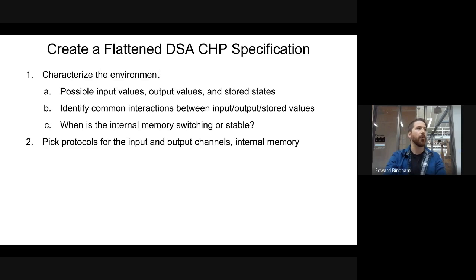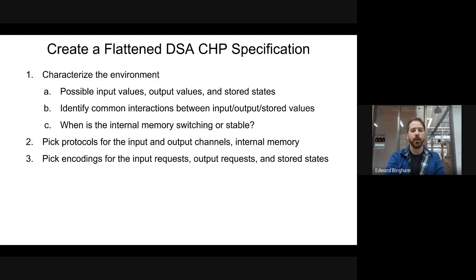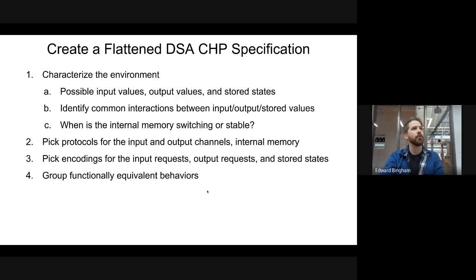Then we want to pick our communication protocols for our input and output channels and the communication protocol for our internal memory, because there are other internal memories than just the unlatch. We also want to pick encodings for our input requests, output requests, and all stored states — maybe having a one-of-two for our counter value and a one-of-two for our above counter state is not a good idea; maybe we want to combine those in some way. Then we take all of these things and group common interactions into much cheaper event encodings.